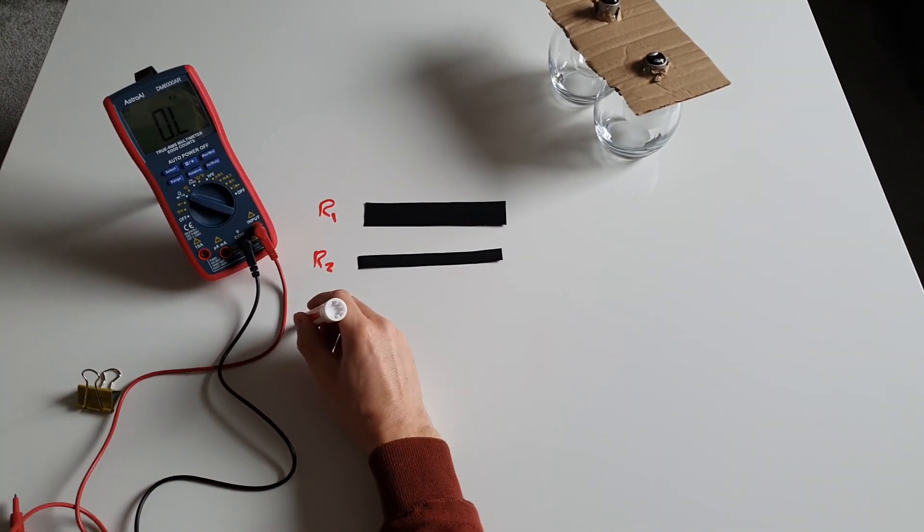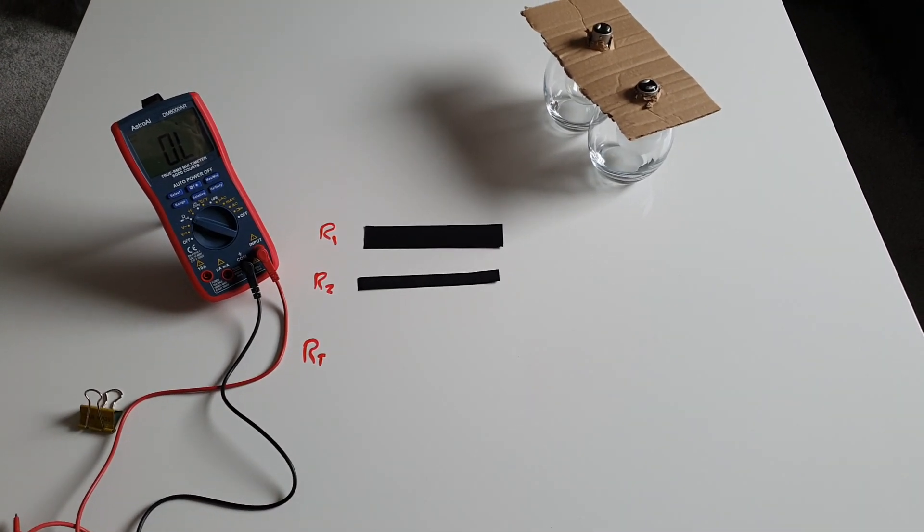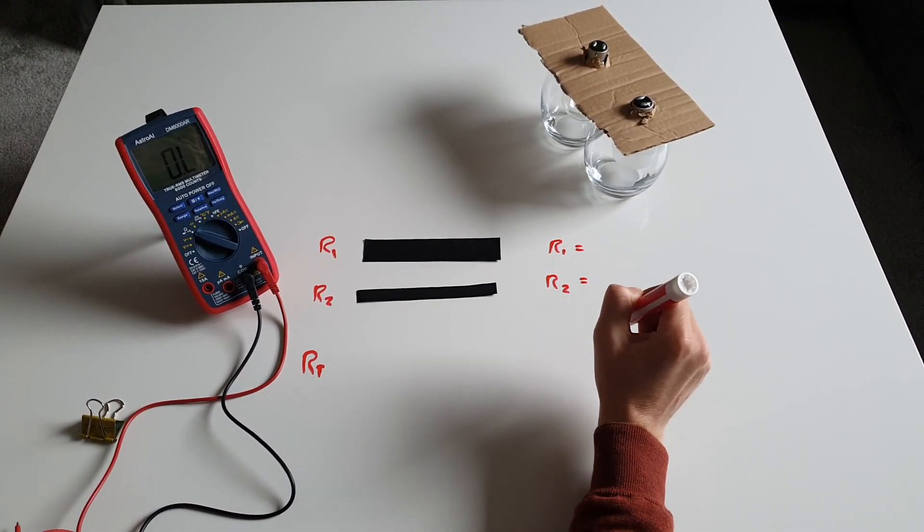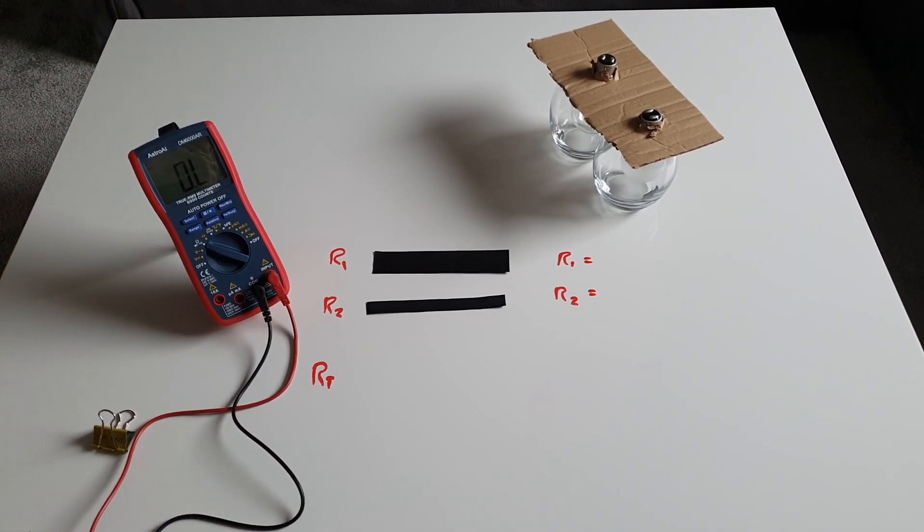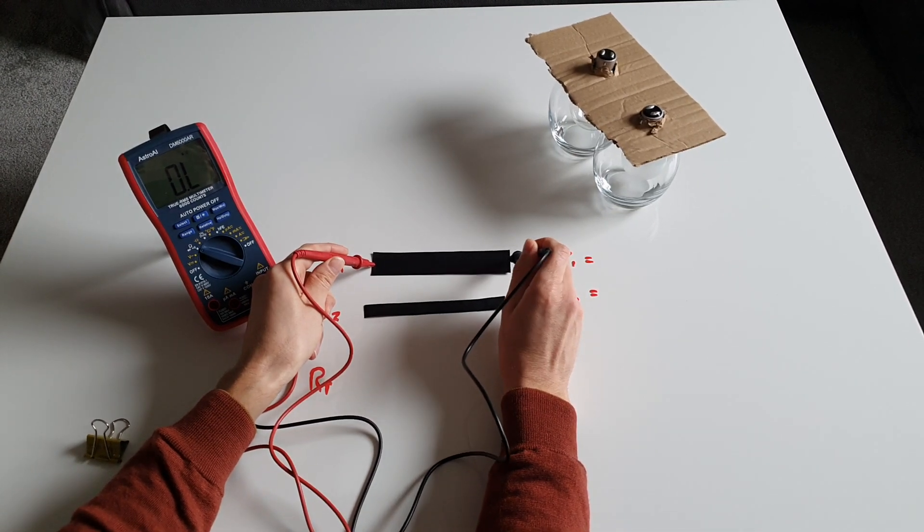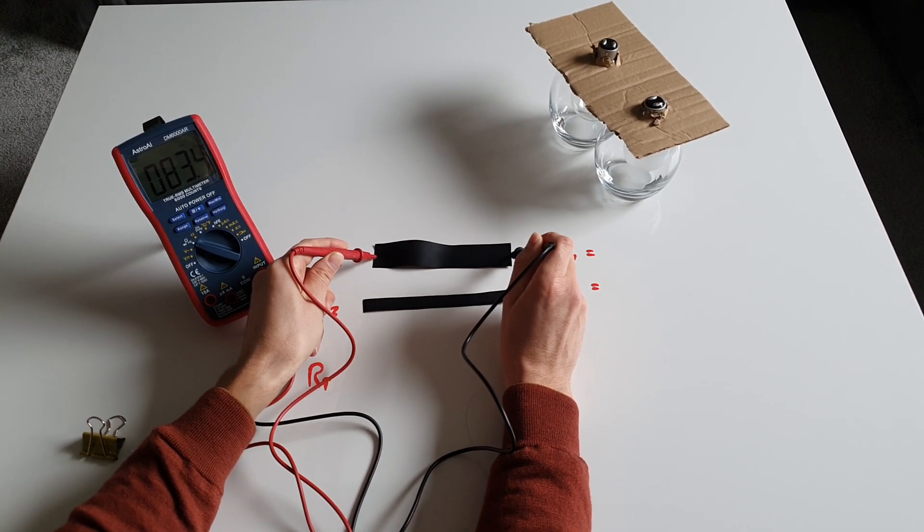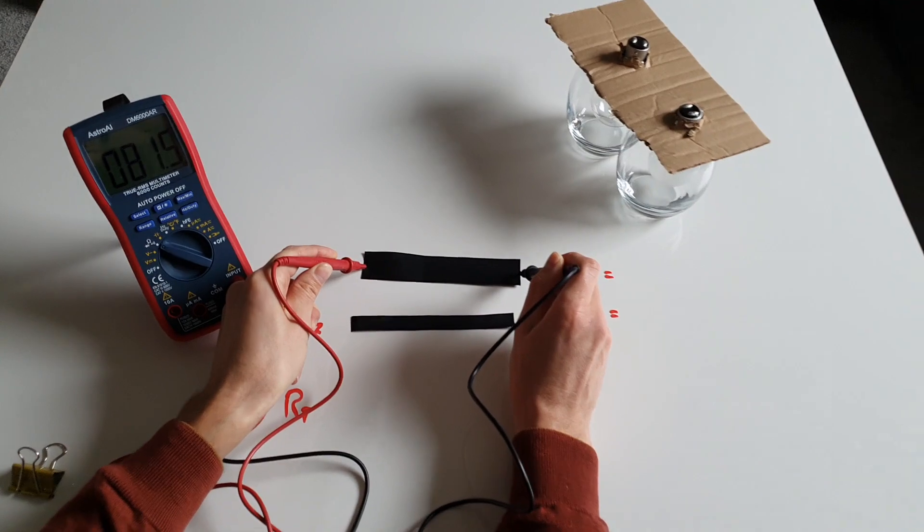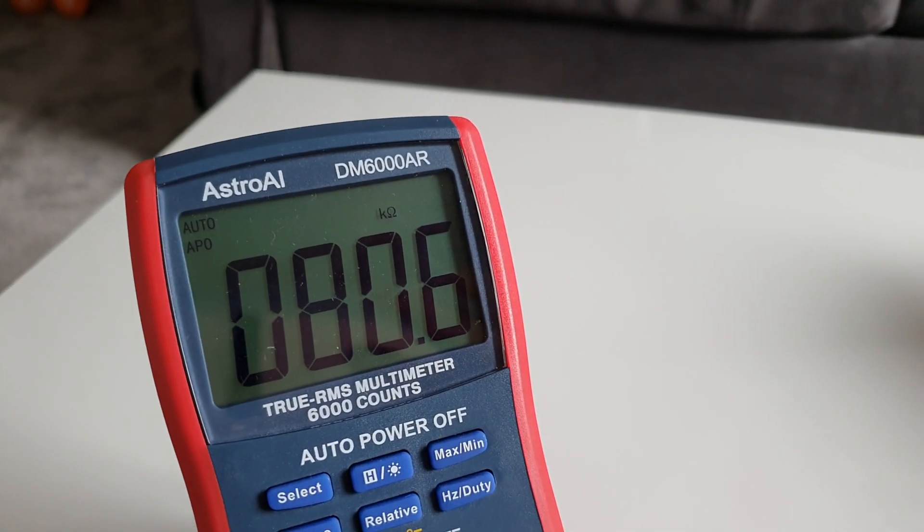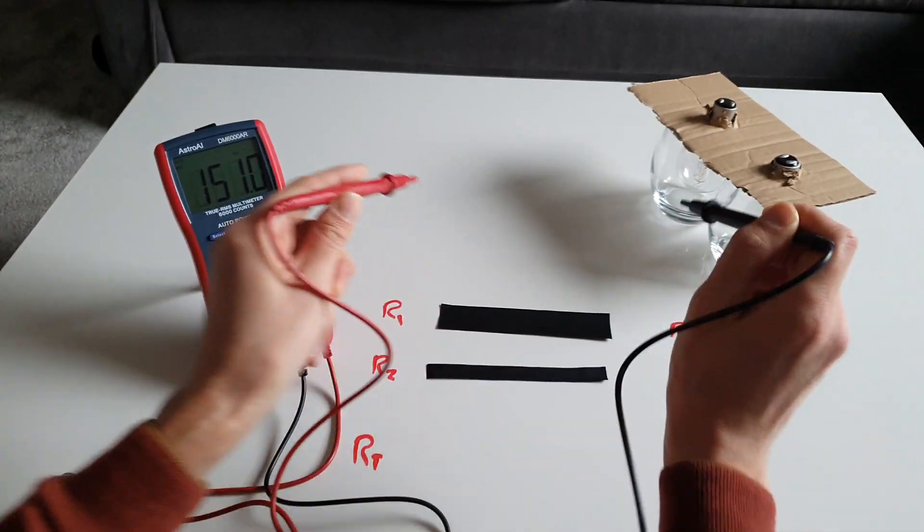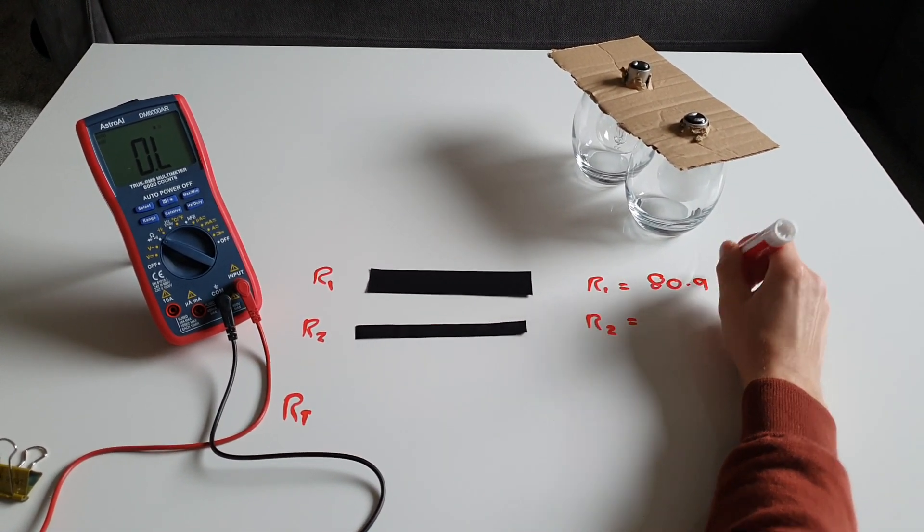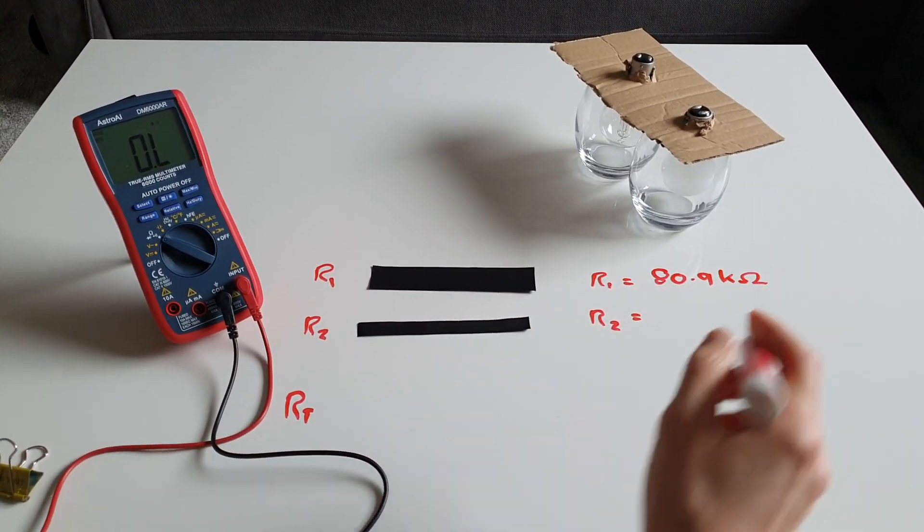All right. We want to calculate Rt. So R1 equals, R2 equals. I'm going to calculate Rt. So this isn't a perfect experiment, but it should show us what's going on. We measure the resistance across the length. Maybe you can see that. If we get the camera closer to the screen, you'll be able to see that it's 81.3 kilo ohms. So that's 80.9 kilo ohms. So let me write that down. We're going to say 80.9 kilo ohms. That's R1.